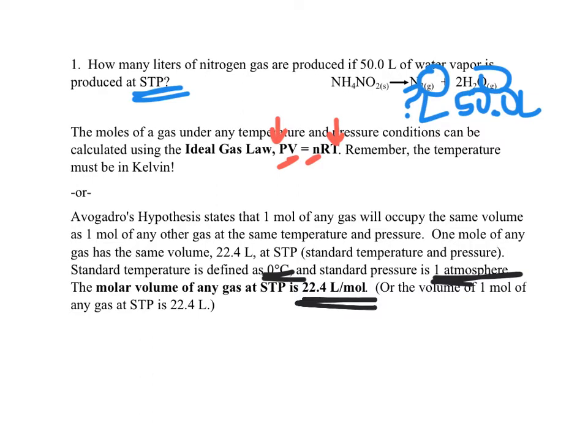This is based on Avogadro's Hypothesis or Avogadro's Law. Basically, we are independent of identity — it doesn't matter what the gas is. It's going to occupy the same volume as the same quantity of any other gas. One mole of any gas will occupy the same volume as one mole of any other gas, as long as temperature and pressure are constant, and we're never going to change temperature and pressure in the middle of a problem.